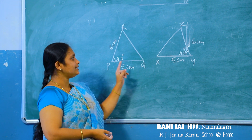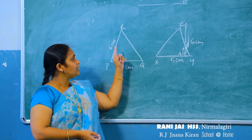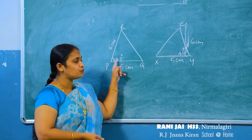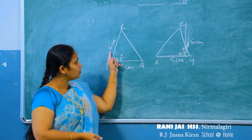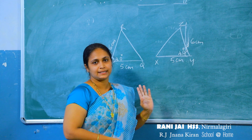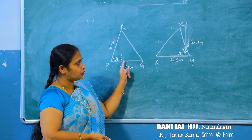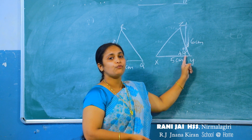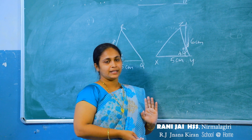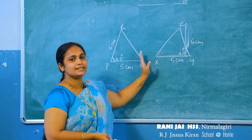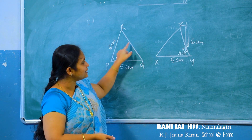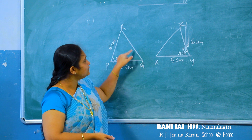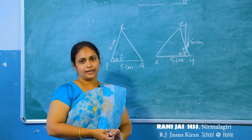In a triangle, if two sides and the angle between them are equal to two sides and the angle between them of another triangle, then these two triangles are equal — that is, the third side is also equal and the other two angles are also equal.